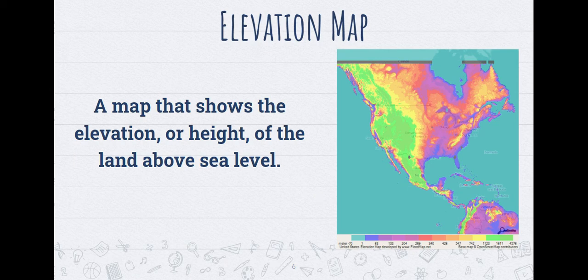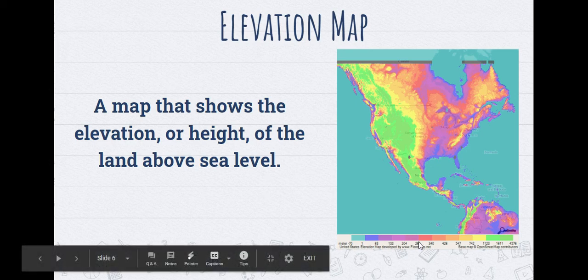Next we have an elevation map. This is a map that shows the elevation or height of land above sea level. We can see using the key at the very bottom what land is the highest. That Rocky Mountain Range area is going to be way higher above sea level than anywhere else in the United States or North America. When we get to the coast we get more of these blues and purples because it's closer to sea level.